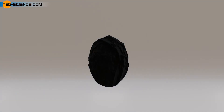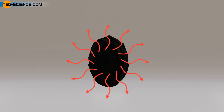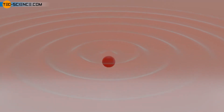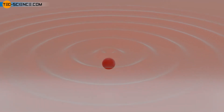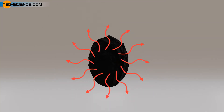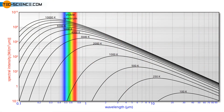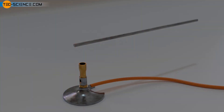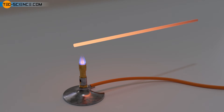In the video on blackbody radiation it has already been explained in detail why every object emits radiation above absolute zero. This radiation is also called thermal radiation. Thermal radiation is caused by the oscillations of atoms that emit electromagnetic waves. Thermal radiation can not only be proven by the fact that it is able to heat other objects. At sufficiently high temperatures, the radiated wavelength spectrum shifts into the visible range and can thus be observed directly by the human eye. The reddish glow of a heated metal bar is, for example, the result of such visible thermal radiation.